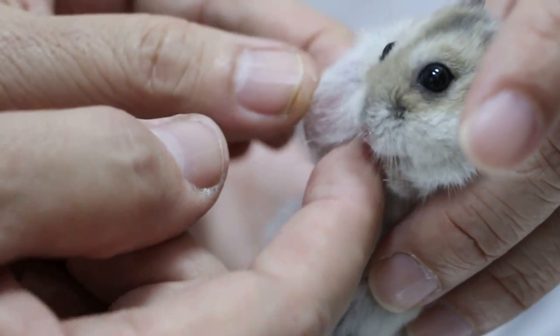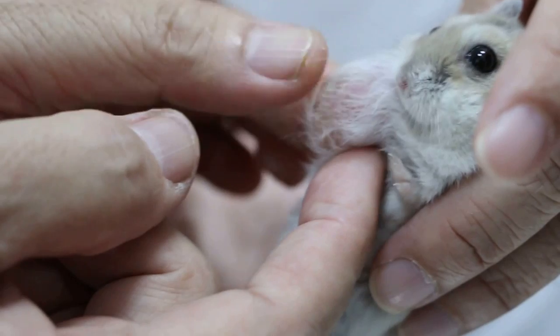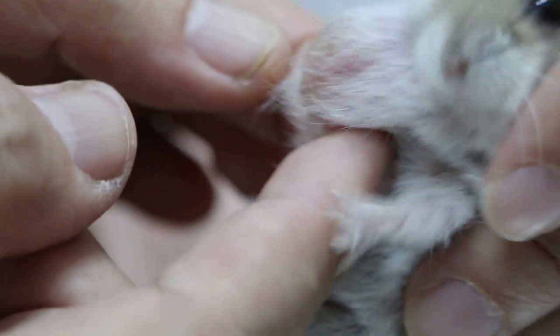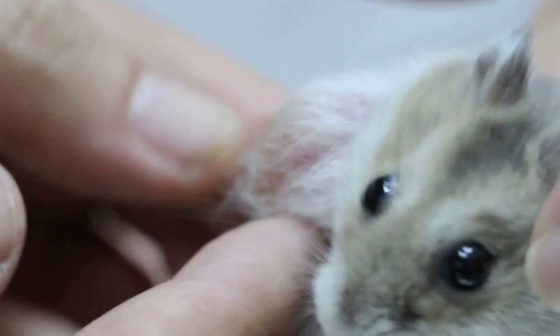Now it feels like a tumor, a subcutaneous tumor or a cyst, because it looks very watery. So if it's a cyst, then when we cut, we have to remove the whole thing, the hamster should be okay.